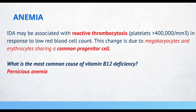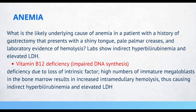Pernicious anemia is the most common cause of vitamin B12 deficiency. What is the likely underlying cause of anemia in a patient with a history of gastrectomy that presents with a shiny tongue, pale palmar creases, and laboratory evidence of hemolysis? Vitamin B12 deficiency — there can be a deficiency due to the loss of intrinsic factor.